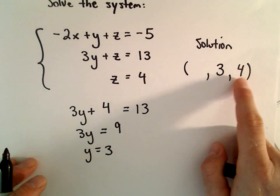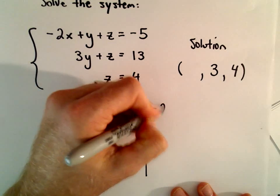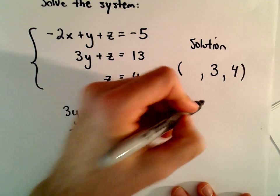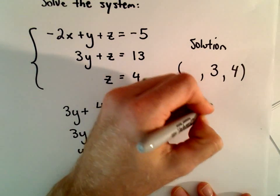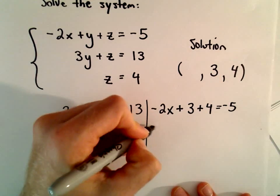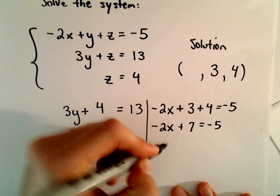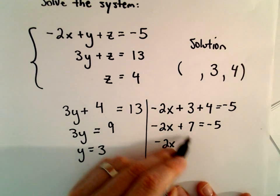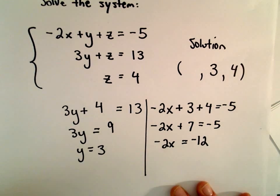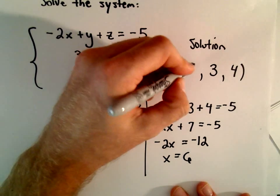Now we know the y value and the z value, so we can solve for the x value as well. We'll have negative 2x plus y, which is 3, plus z, which is 4. If we subtract 7 from both sides, we'll have negative 5 minus 7, which will be negative 12. Then if we divide both sides by negative 2, we'll have that x equals 6.